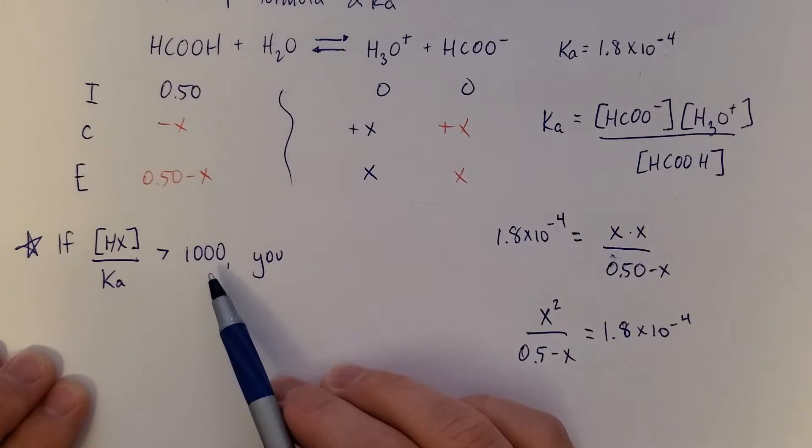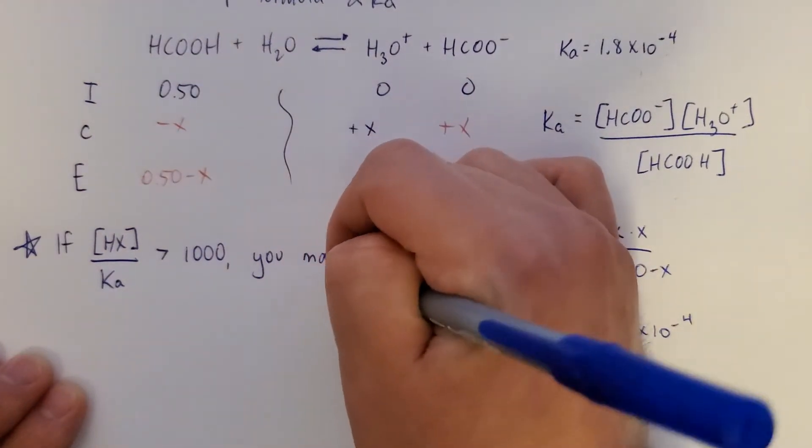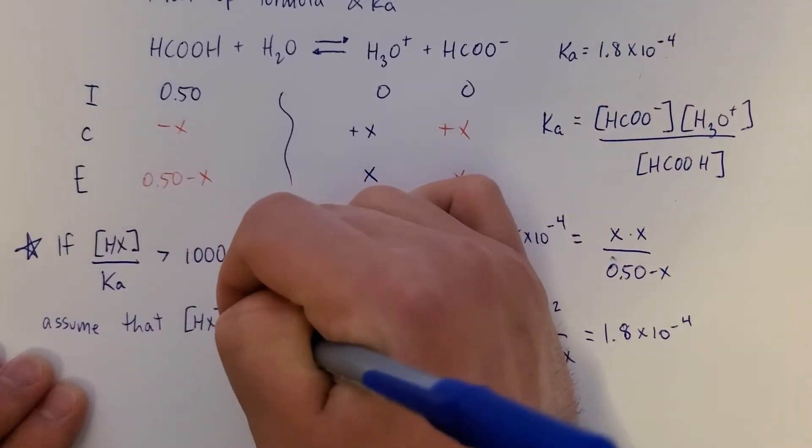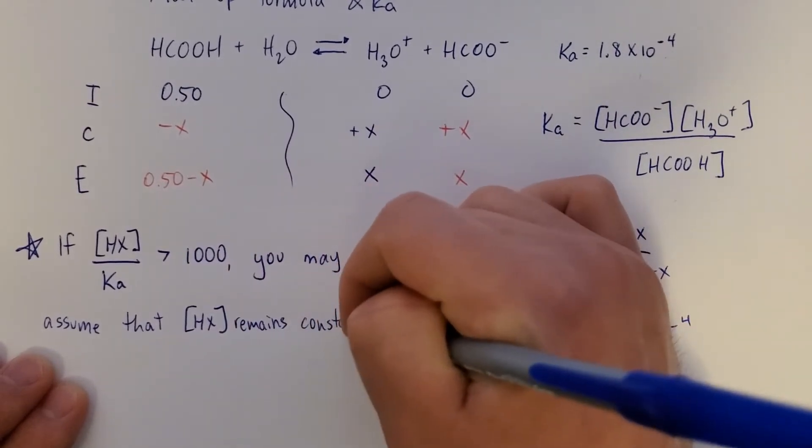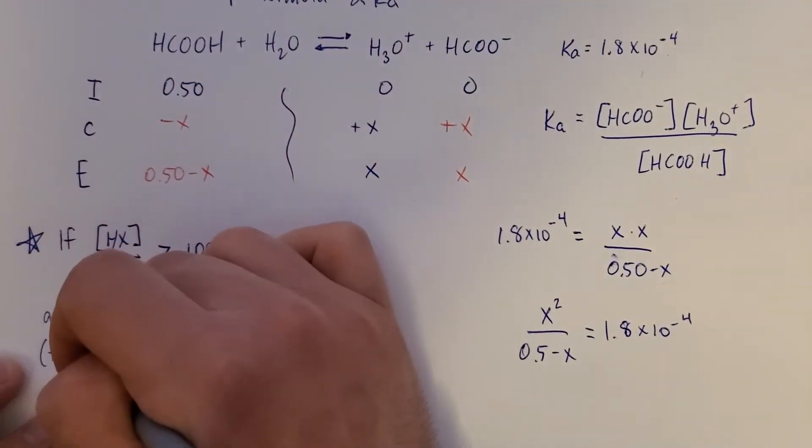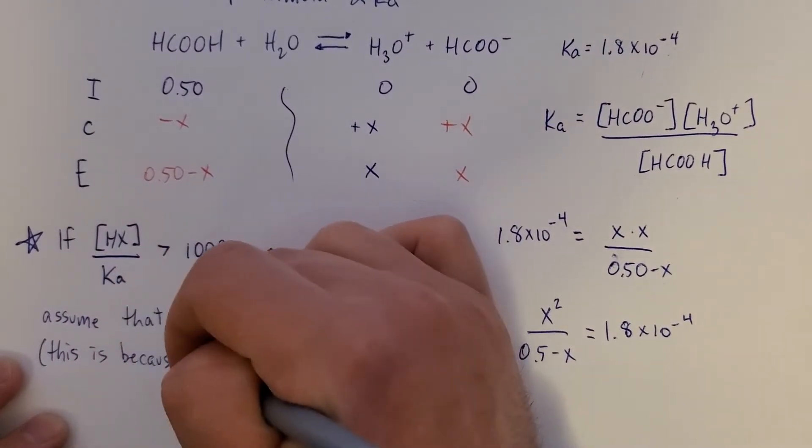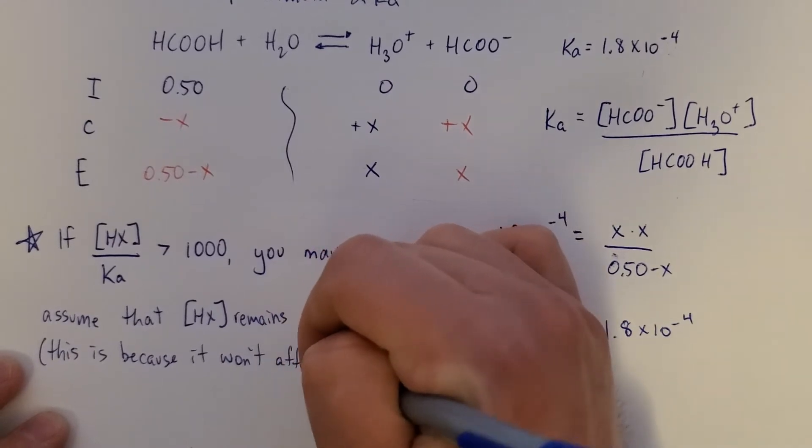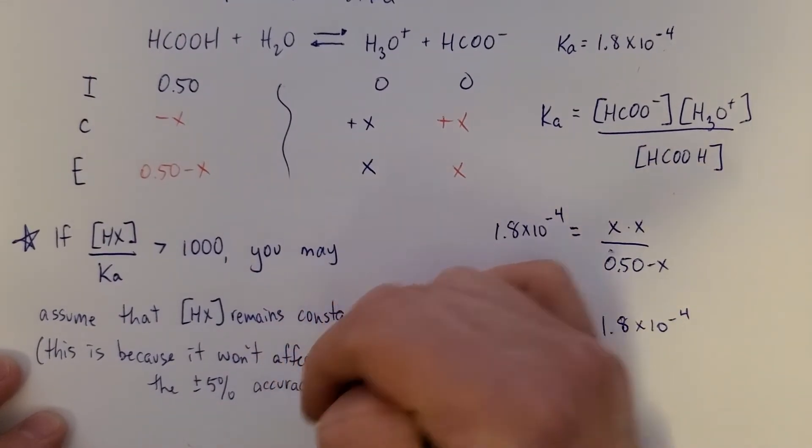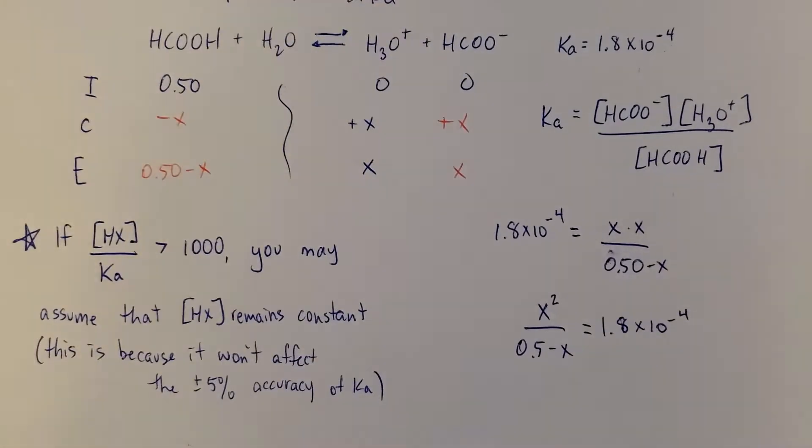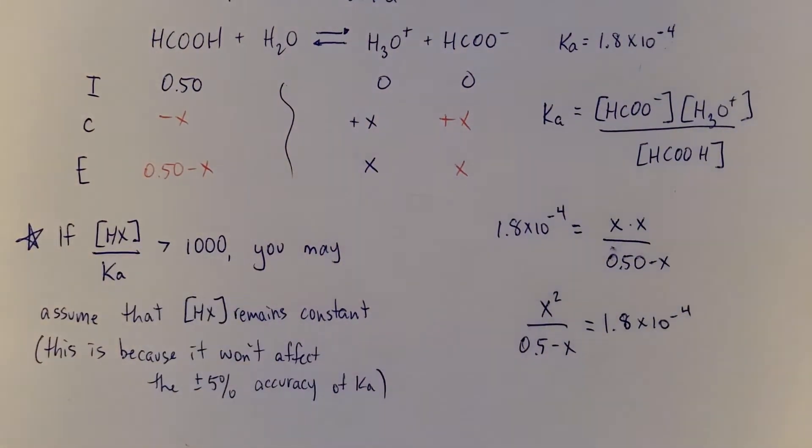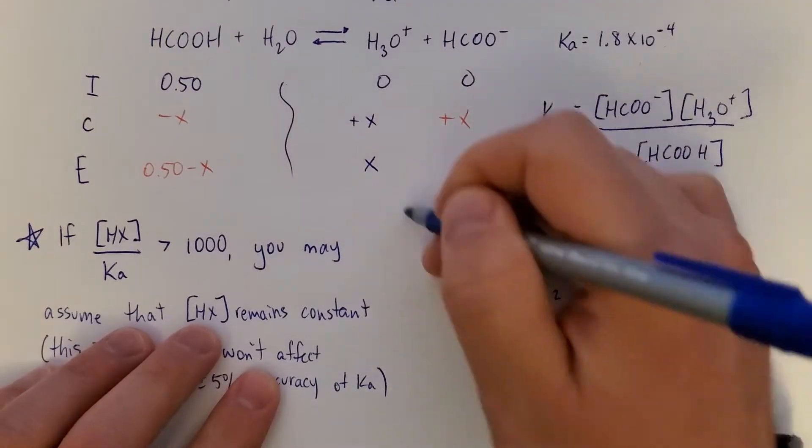So let me write down what you can do. If this value is greater than 1,000, you may assume that the acid concentration remains constant. And I'll mention again, this is because it won't affect the plus or minus 5% accuracy of Ka. So what you need to do is see if the acid concentration divided by Ka is greater than 1,000. So let's do that. I've got a small amount of room right here.